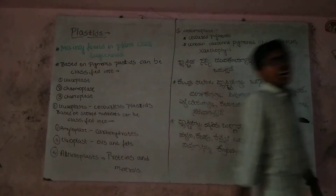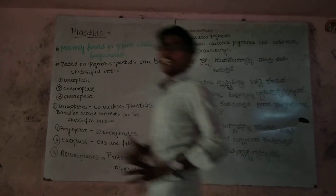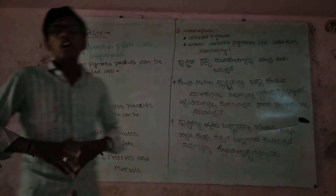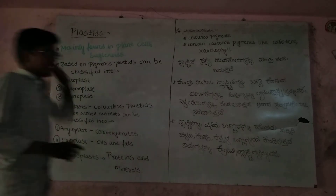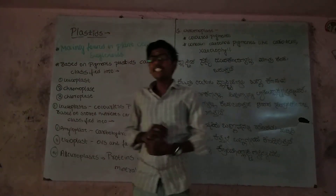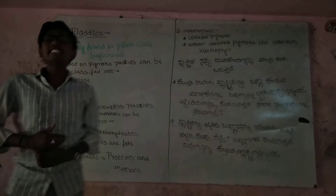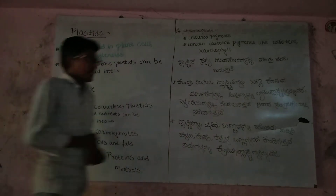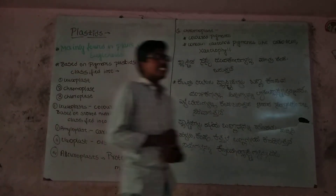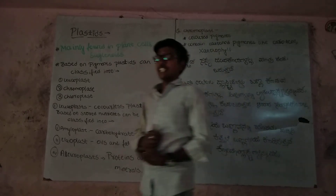Hi friends, I am Shivanan, studying in Jaisas College in Darabakh. This video I am going to explain plastics. Plastics are mainly found in plant cells. The presence of plastics is a unique characteristic in plant cells.